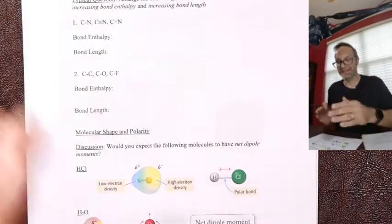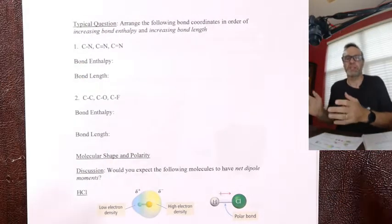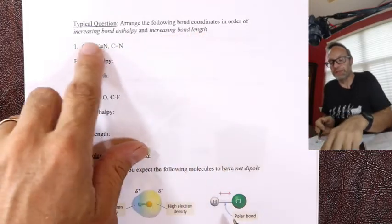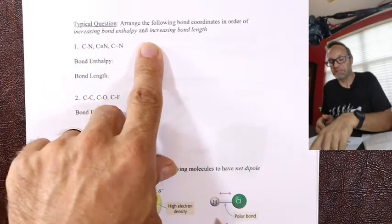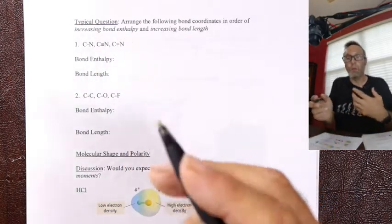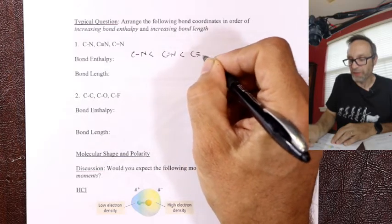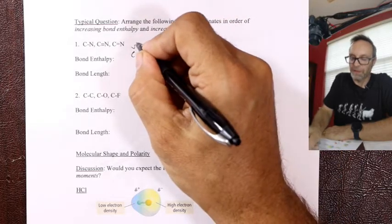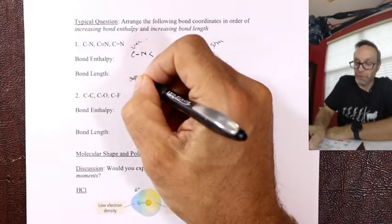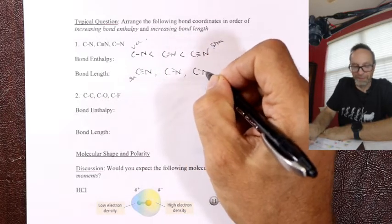Here's a classic question - try it yourself. Arrange the following bonds in order of increasing strength and increasing bond length. For C-N bonds: C single bond N is weaker than C double bond N, which is weaker than C triple bond N. So for increasing strength: single, double, triple. For increasing bond length - shorter is stronger, so the reverse trend: the triple bond is shortest, then double, then single.